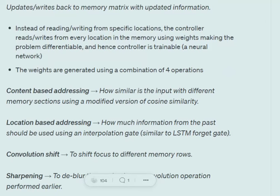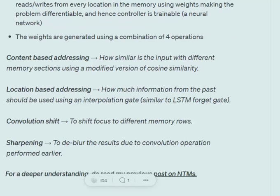The weights that are generated are a combination of four operations. One is content-based addressing — how similar is the input we got with the memory matrix entries. Location-based addressing helps us manage how much from the previous weights we should carry forward, essentially capturing historic information like the forget gate in LSTMs. Then there is a convolution shift operation to shift focus for different memory rows, and sharpening to sharpen the results.